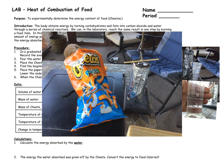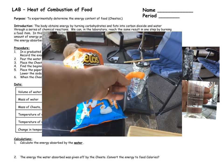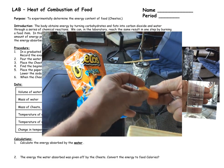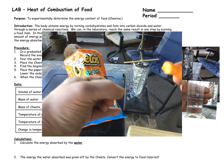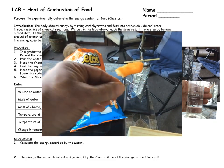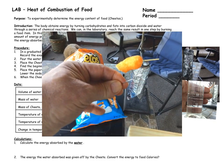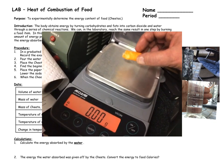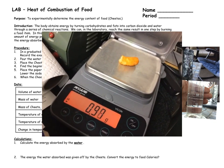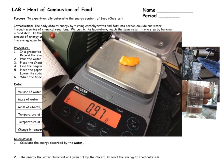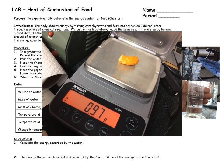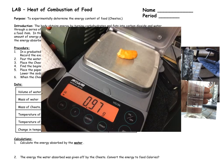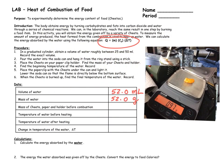Next, we have to prepare our Cheeto. We're going to use just a piece of Cheeto, and put it on this little paper clip stand so it can sit under the calorimeter. But first, we must find the mass of our Cheeto. The mass of the Cheeto is 0.97 grams.